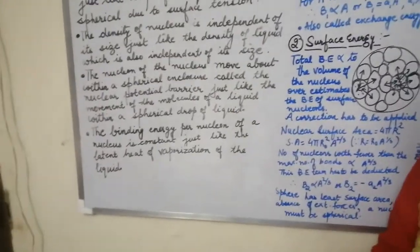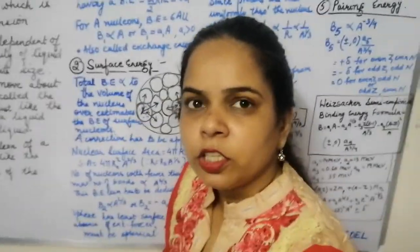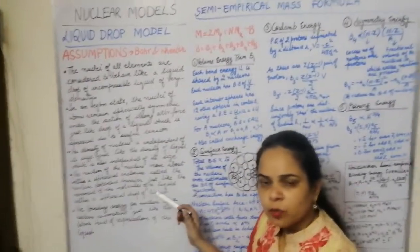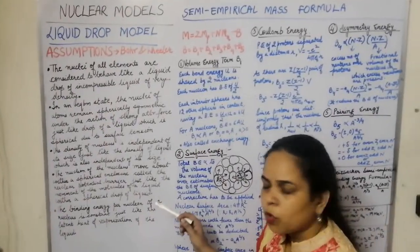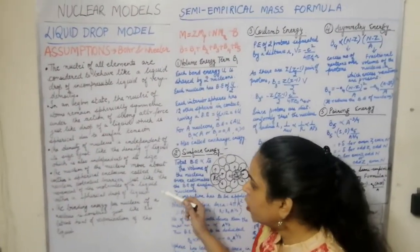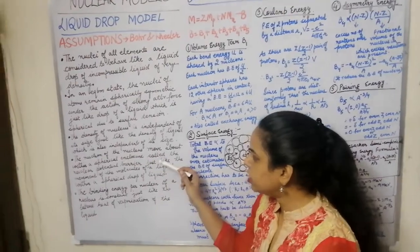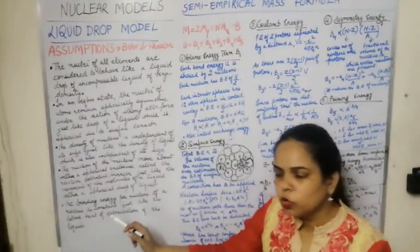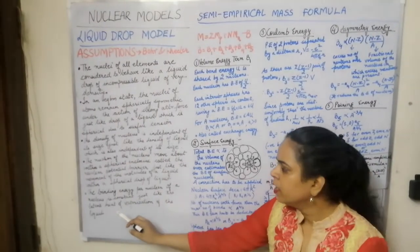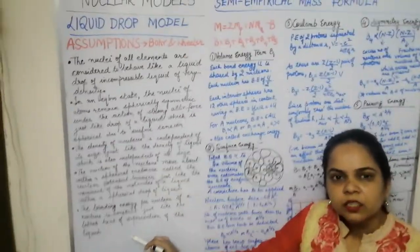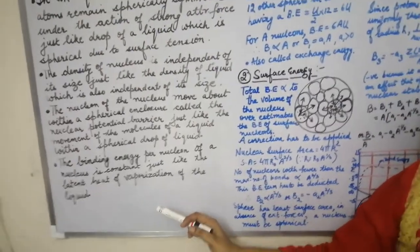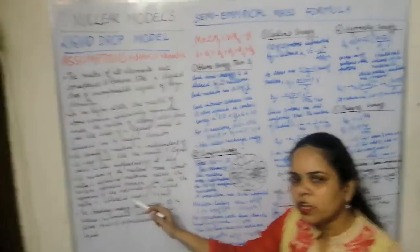Since there is a spherical enclosure, no nucleon can simply come out of the nucleus — it has to cross a potential barrier. Similarly, in a liquid drop, molecules must cross a molecular barrier to escape. The fifth assumption was that the binding energy per nucleon is constant, just as the latent heat of vaporization of a liquid is constant. So the binding energy per nucleon in the nucleus is analogous to the latent heat of vaporization — both are constant.